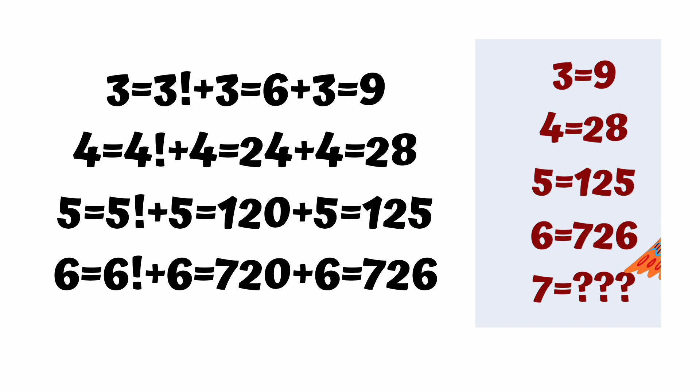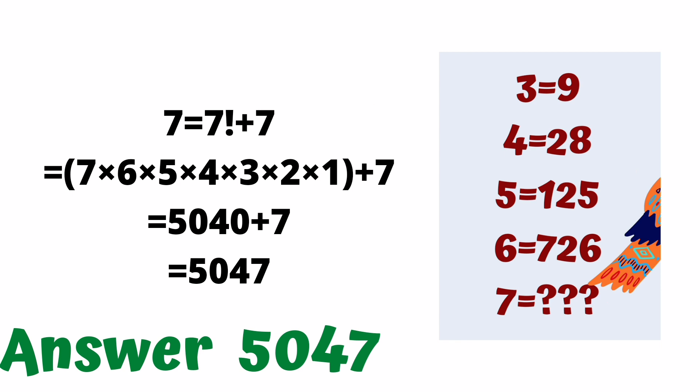If all the rows are satisfied, then what will be the final solution? 7 factorial plus 7. Solve friends, 7 factorial value is 5040, add 7, final answer is 5047.